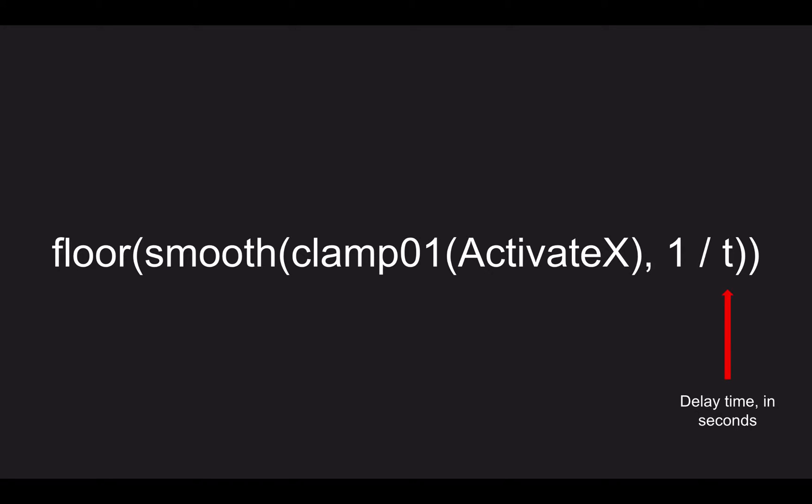The first portion we're going to change is the delay time. So t here is any number you can change. If you wanted a delay time of five seconds, then you can change t to five and it would read one over five. Next up is obviously the activation group number. For example, if I wanted my delay script to operate on activation group one, then I'll just write activate one. If it was activation group two it would be activate two, and so on.